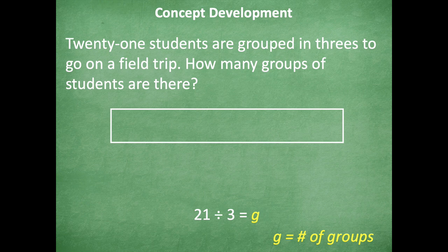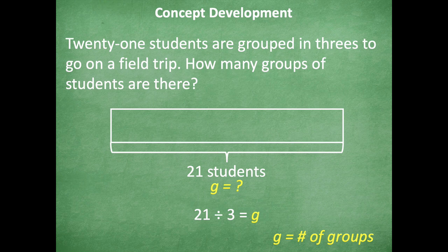So I could draw the tape diagram. I know that the total is 21 students, and I'm trying to find out how many groups there are. So I'm going to have to count by threes because that's how many are in each group until I get to what number, friends? Yeah, 21.